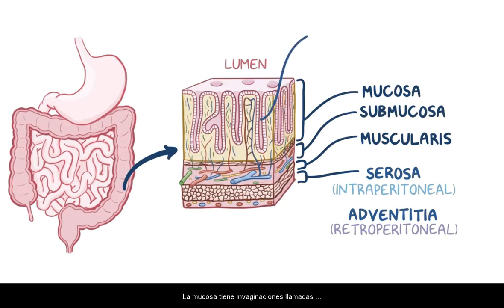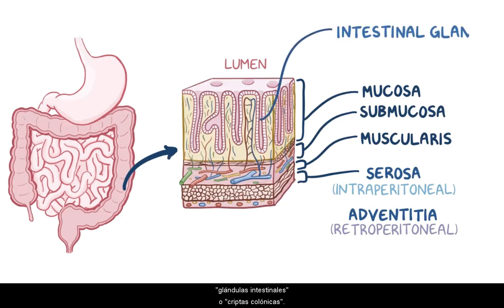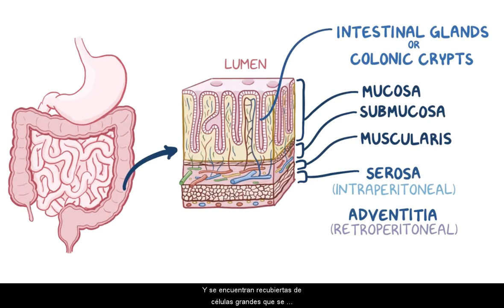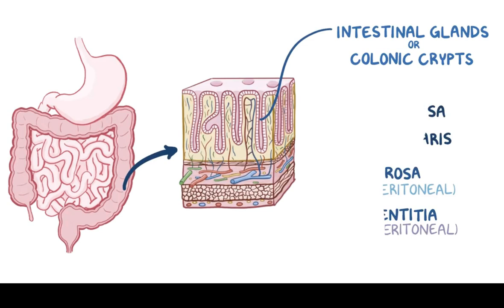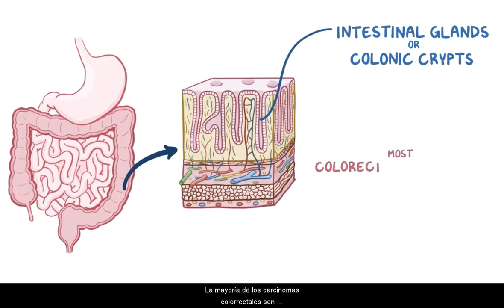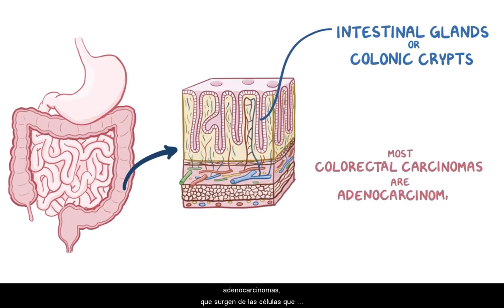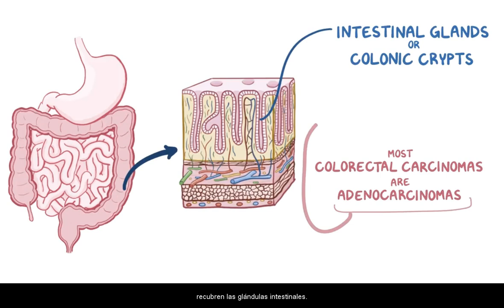The mucosa has invaginations called intestinal glands, or colonic crypts, and is lined with large cells that are specialized in absorption. Most colorectal carcinomas are adenocarcinomas, meaning that they arise from the cells lining the intestinal glands.